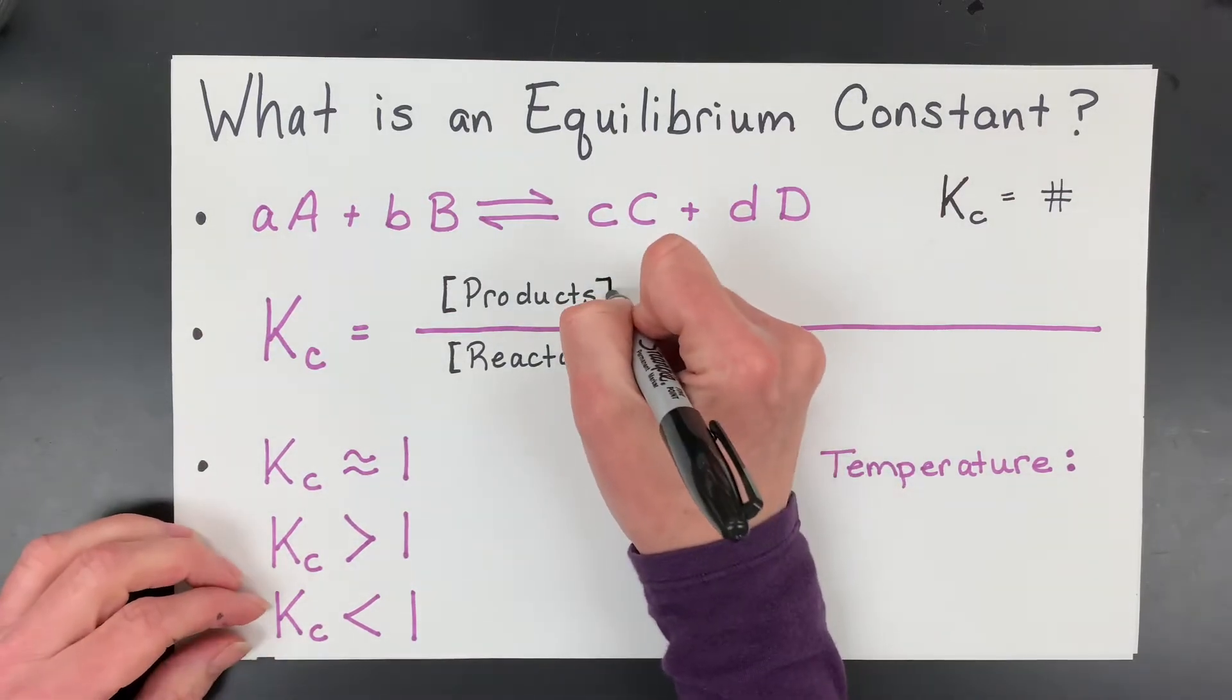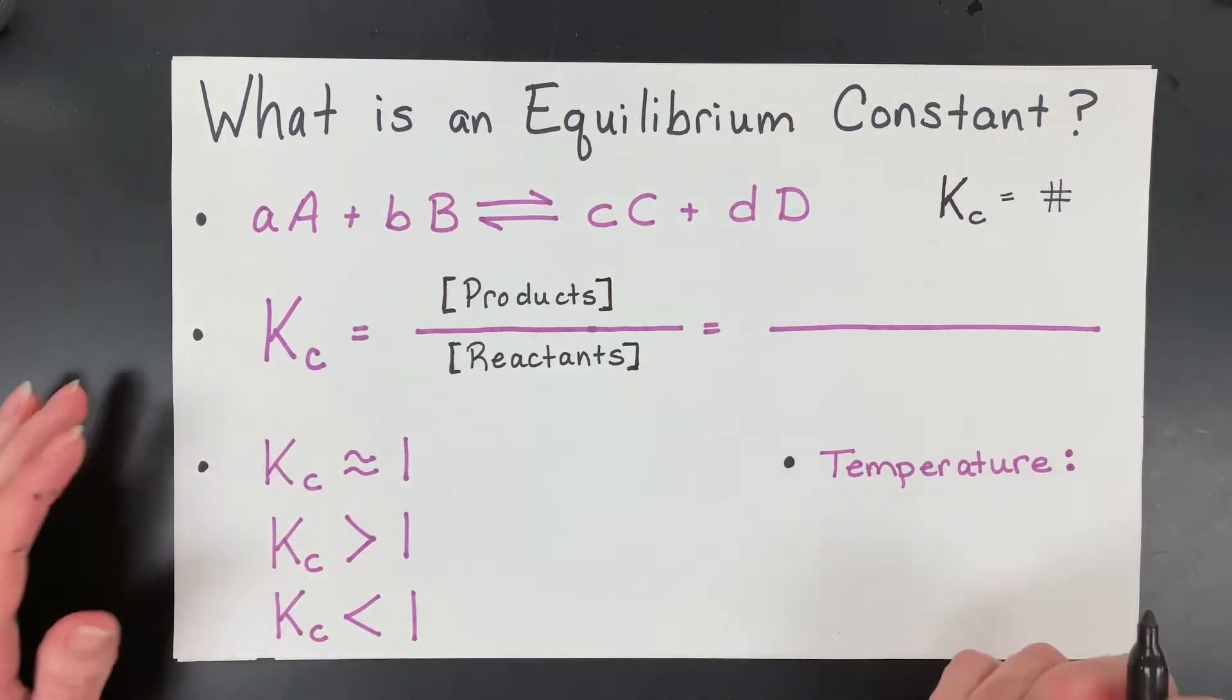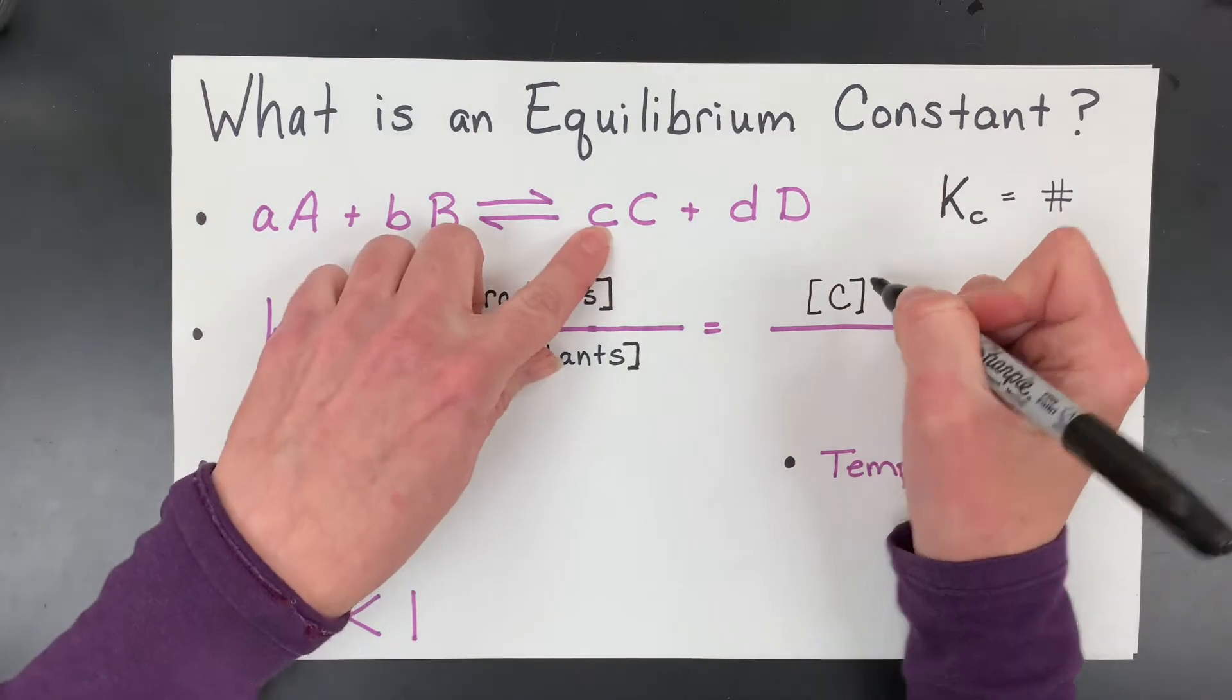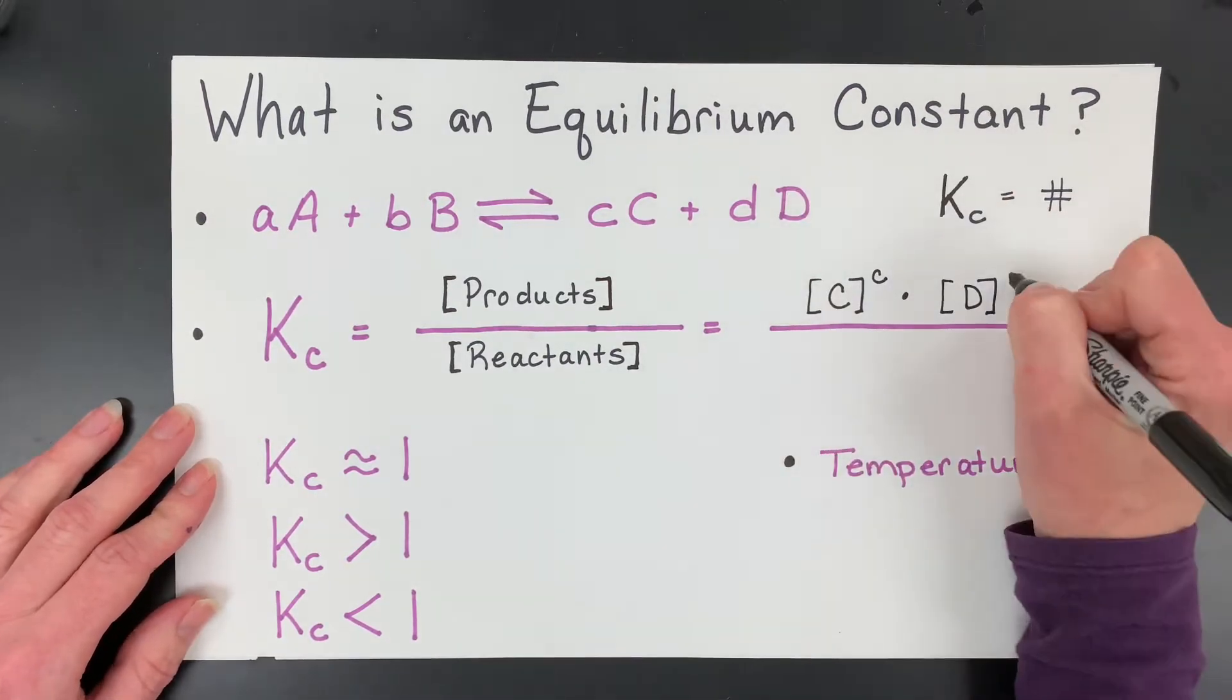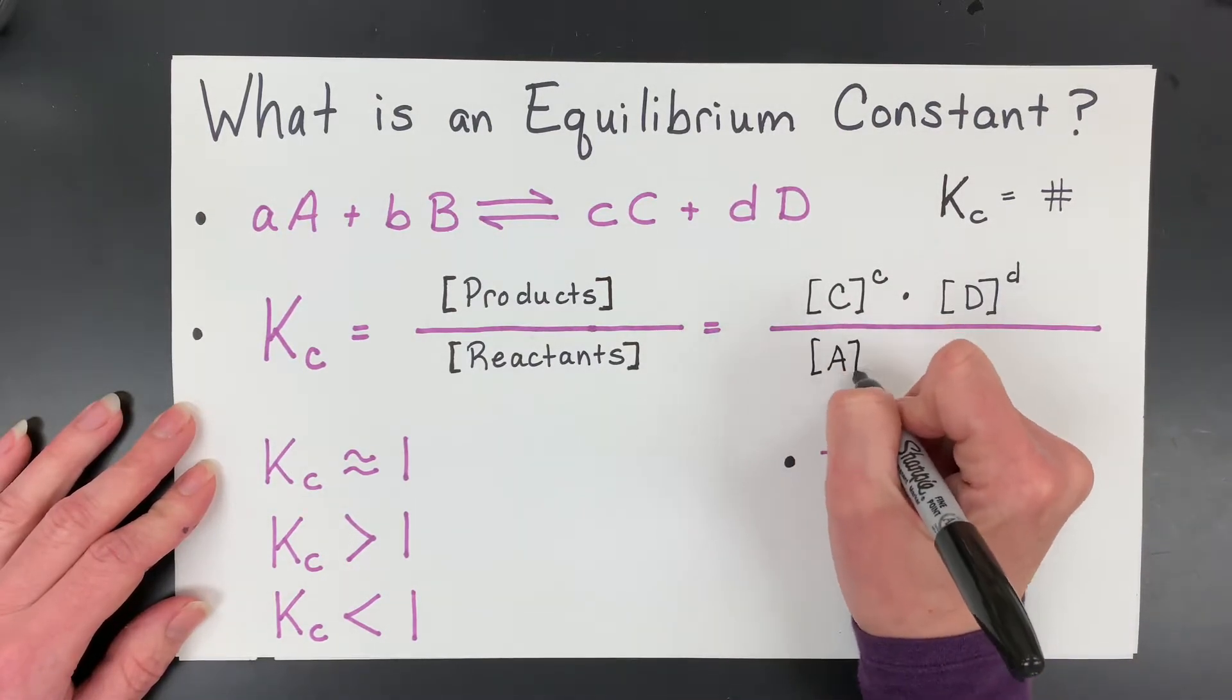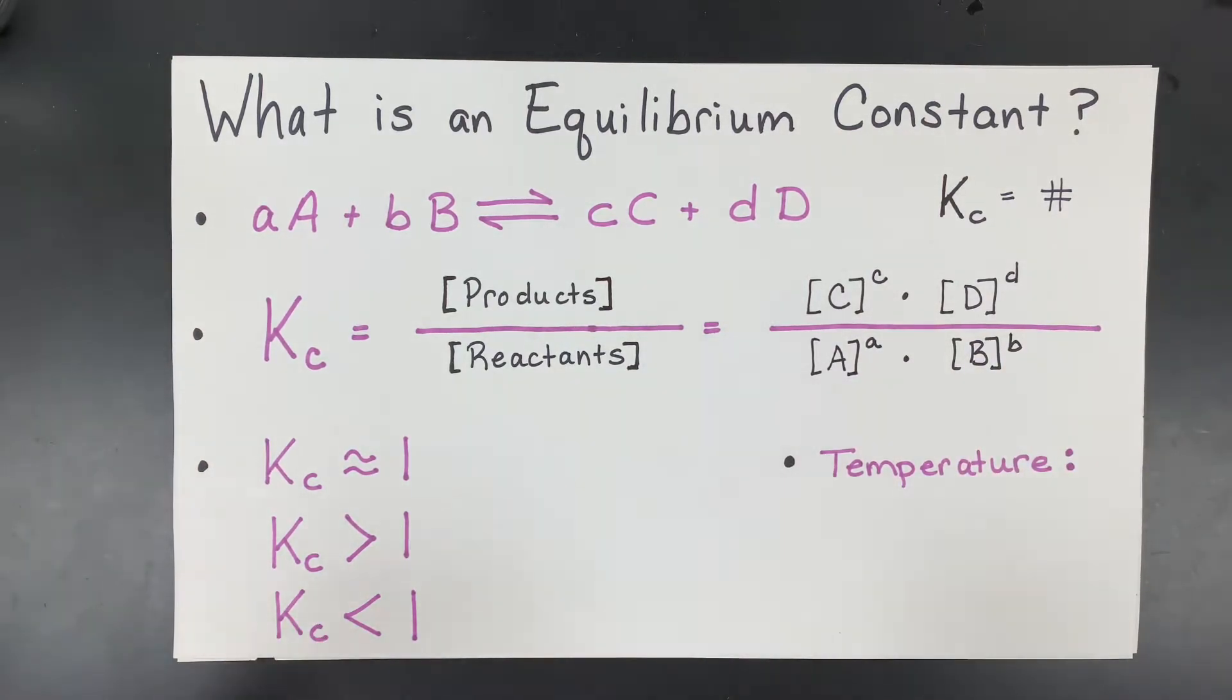Now, more than that, you have to know that the brackets mean concentration, and when you have a balanced chemical equation, these coefficients are important in writing this law of mass action. So you put your product concentration, which would be C, but then you raise it to the power of the coefficient. You do the same thing, you multiply that by the concentration of D, whatever that product D is, to the power of its coefficient, and then you divide it by the concentration of your reactant A raised to the power of A, and B raised to the power of B. And that is the shortened version of the law of mass action. That is how we calculate an equilibrium constant.